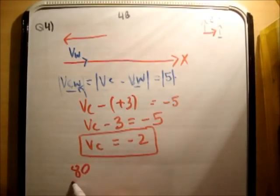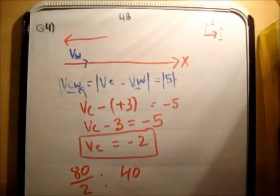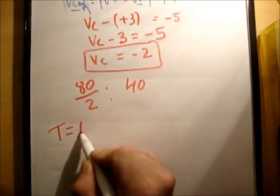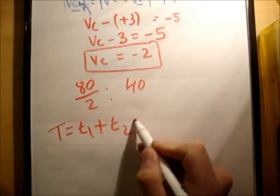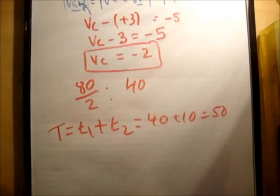So this time, 80 meters divided by 2 meters per second, he does that in 40 seconds. So the total time is equal to T1 plus T2 is equal to 40 plus 10 equals 50. That's correct.